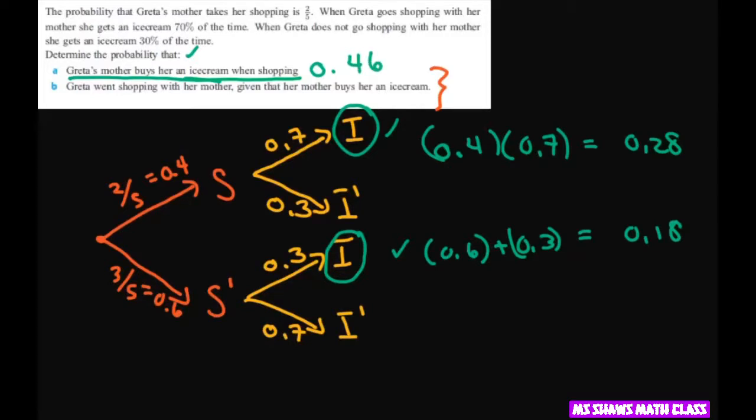The second question: Greta went shopping with her mother given that her mother buys her ice cream. So given that her mother buys her ice cream is here, so that's 0.46. Given always goes in the denominator.